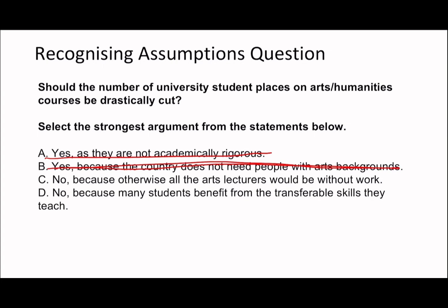Option C says no, because otherwise all the art lecturers will be without work — that narrows it to just the art lecturers, whereas the question is about university students. Option D says many students benefit from the transferable skills that arts courses teach. D is the one that makes the most sense here, as the others don't really fit the question well.